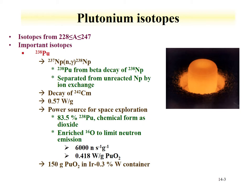If you have a nucleus with an extra neutron, for instance oxygen-17, the alpha-n reaction — the alpha particle hitting oxygen-17 and producing a neutron — has a relatively large cross-section, so you want to limit the amount of neutrons coming off your source. If you make the plutonium dioxide, you'll have a power source of about 0.4 watts per gram. You can make 150 grams of plutonium dioxide in an iridium container to produce this heat, which can be converted to electricity. This is used on spacecraft for missions to planets beyond Mars, and also on the Mars rover Curiosity.